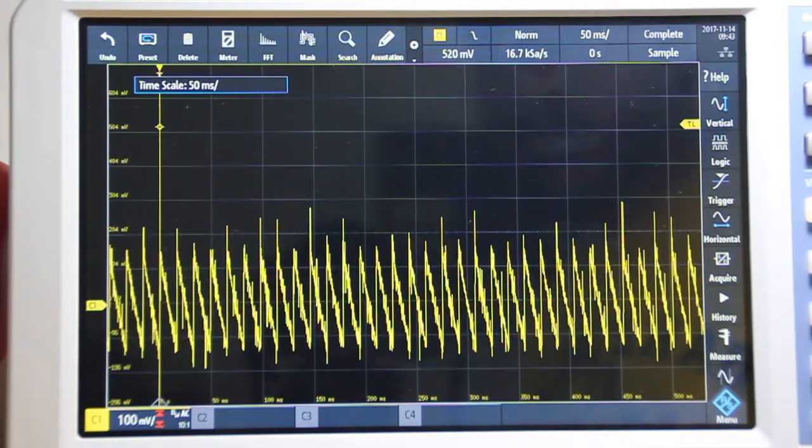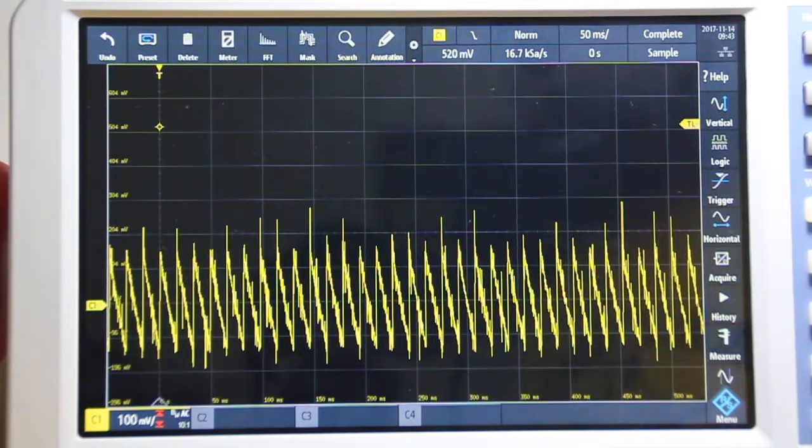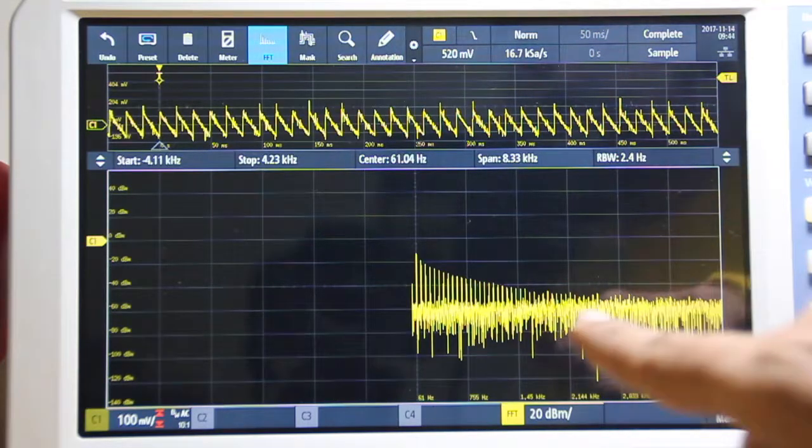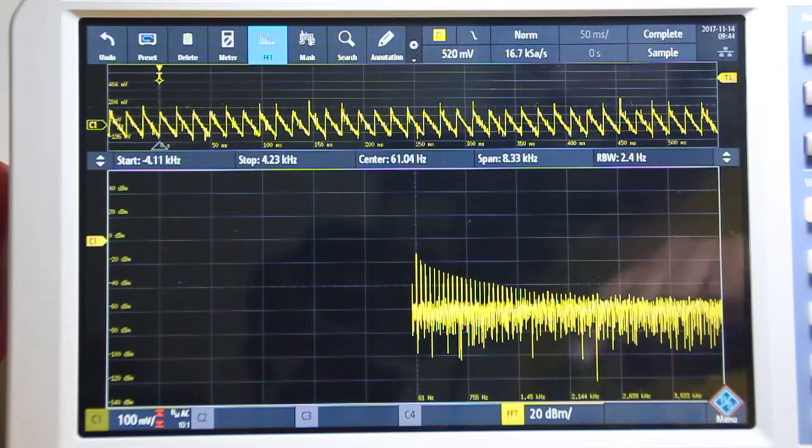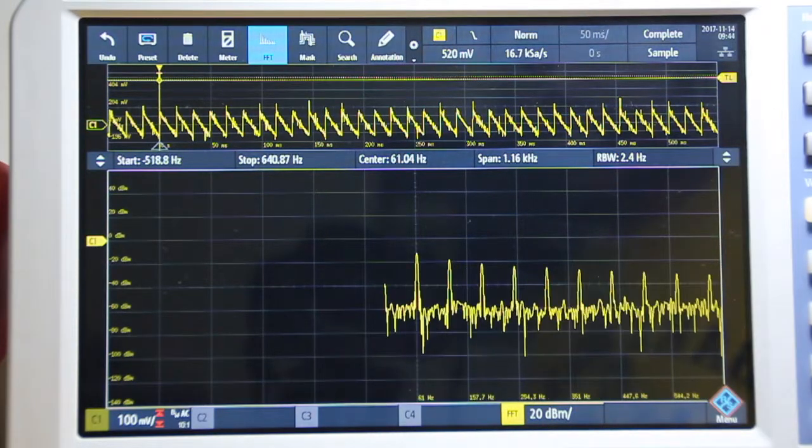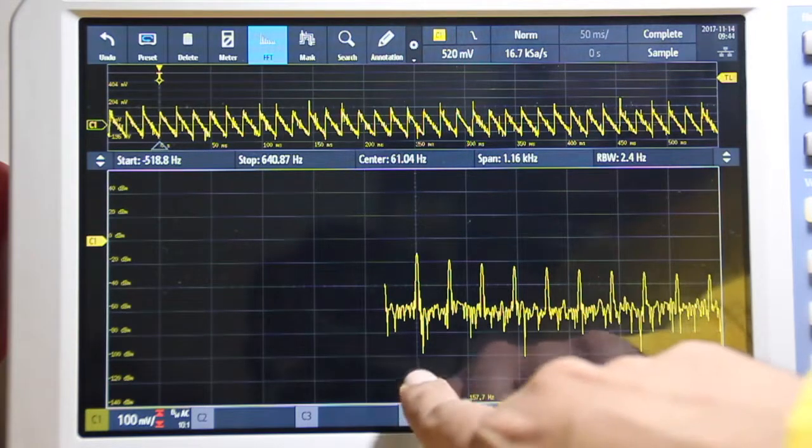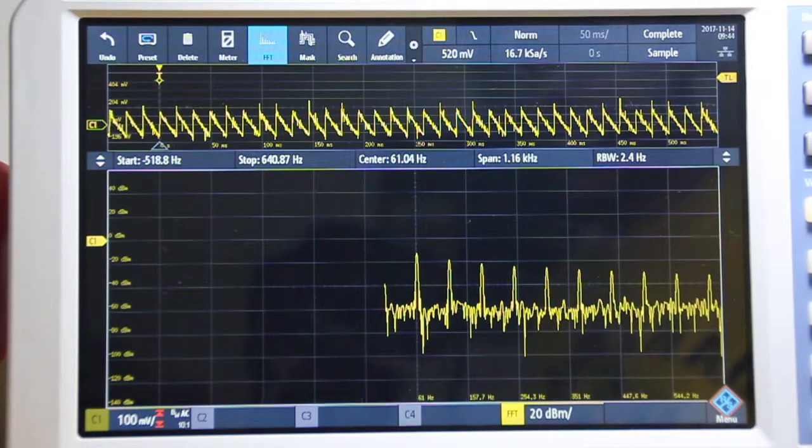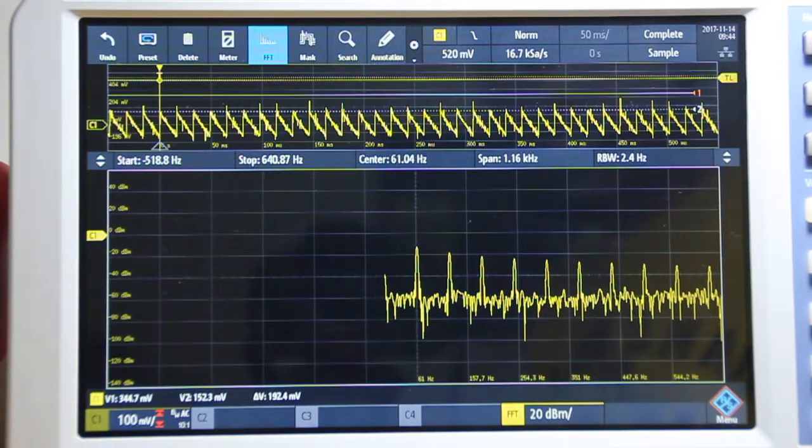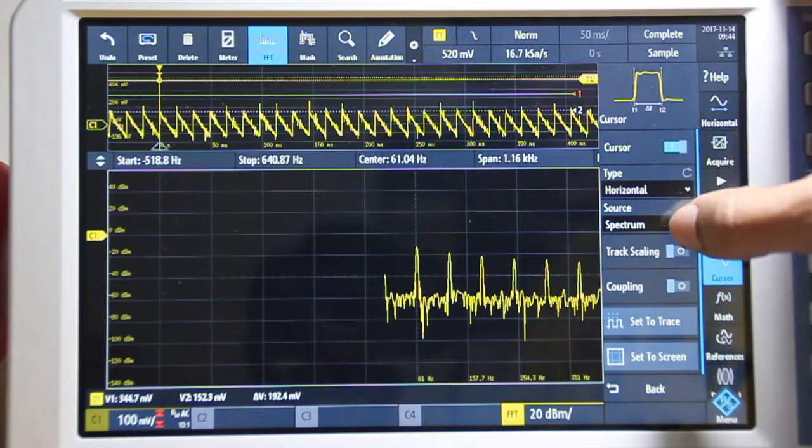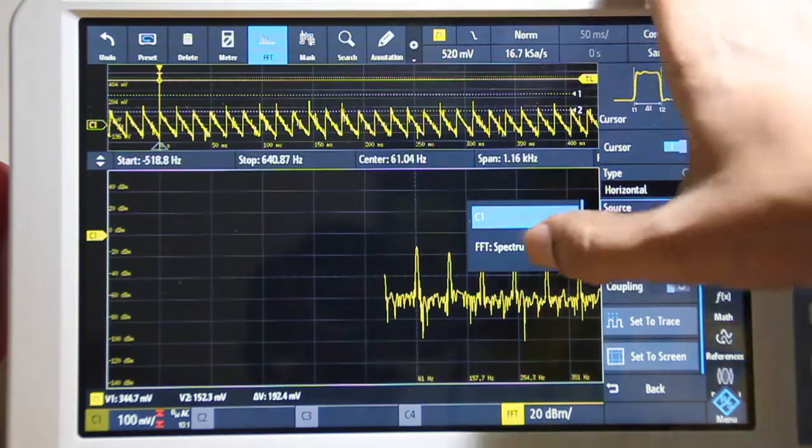Stop acquisition and go into Fourier transform, just press the Fourier transform button. So now that's the Fourier transform, clicking on that, scale into it. Already I can see that it's pointing to 61 Hertz. I use cursors, press the cursor button, then cursor menu pops up. The cursor is now type is FFT spectrum.